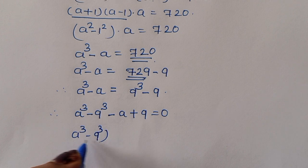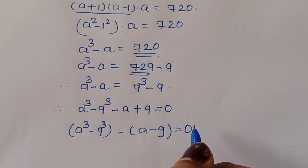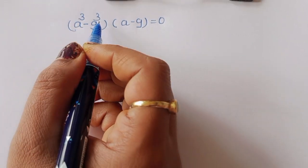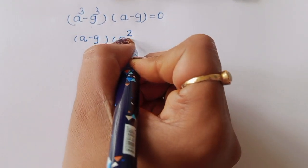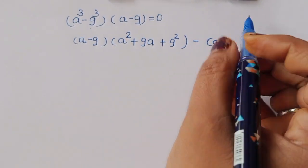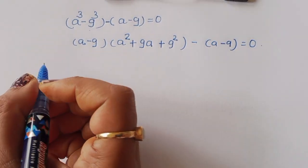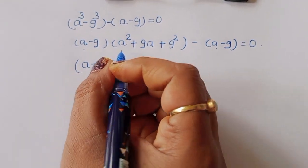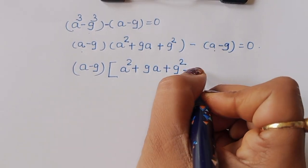We apply the a³ - b³ formula to factor a³ - 9³ as (a-9)(a²+9a+81). Taking common from the remaining terms: minus(a-9). So we factor out (a-9), giving (a-9)(a²+9a+81-1) = 0.